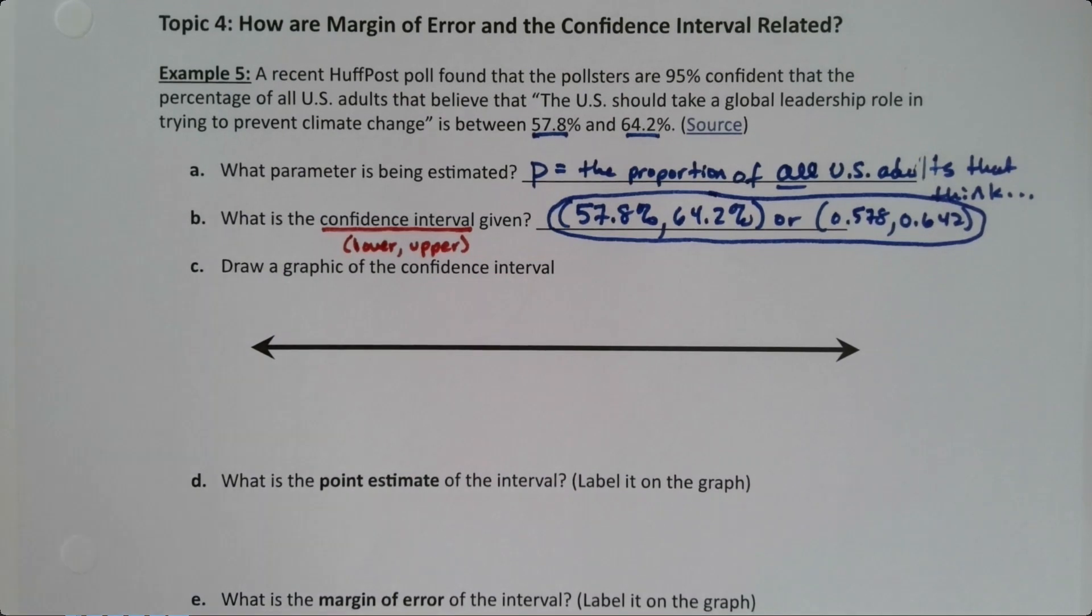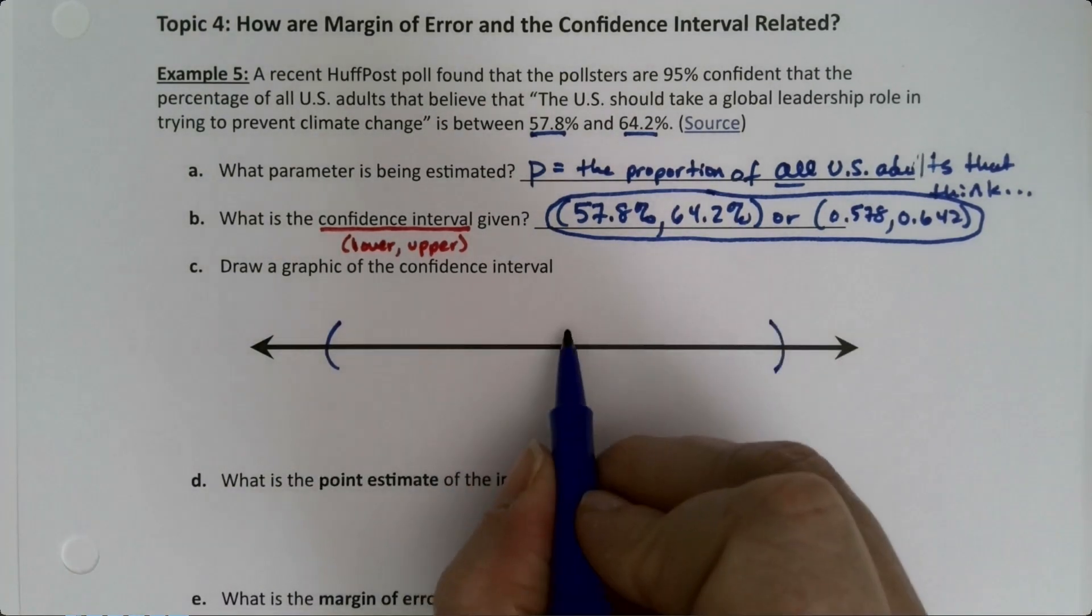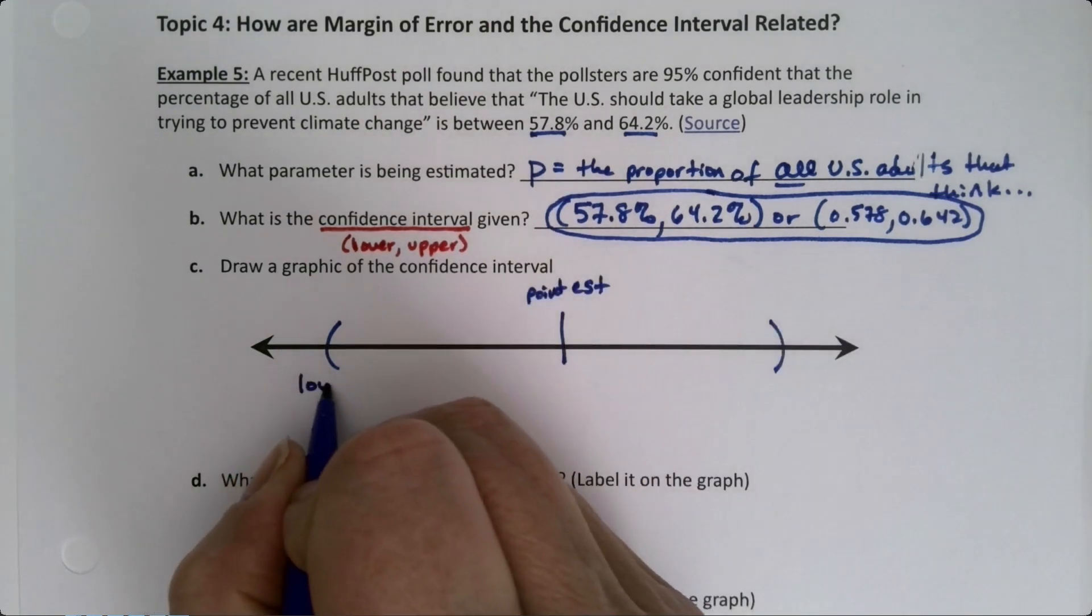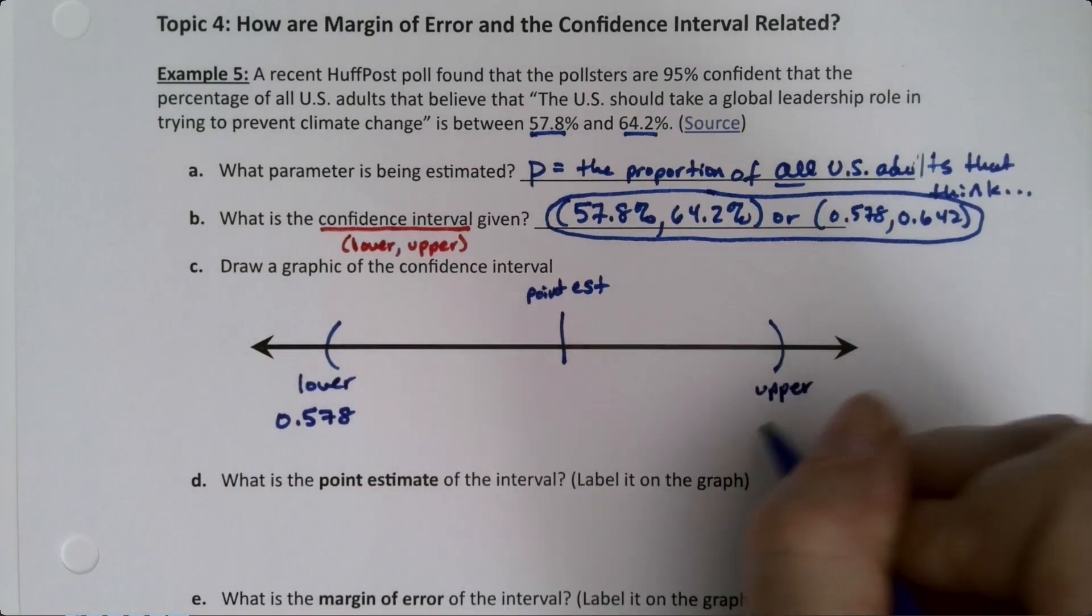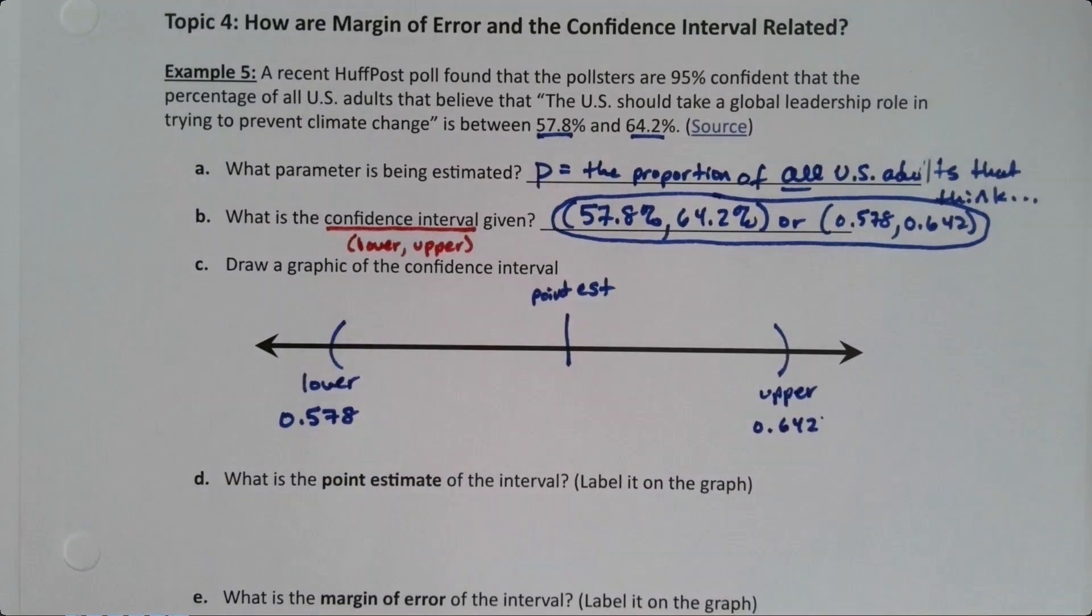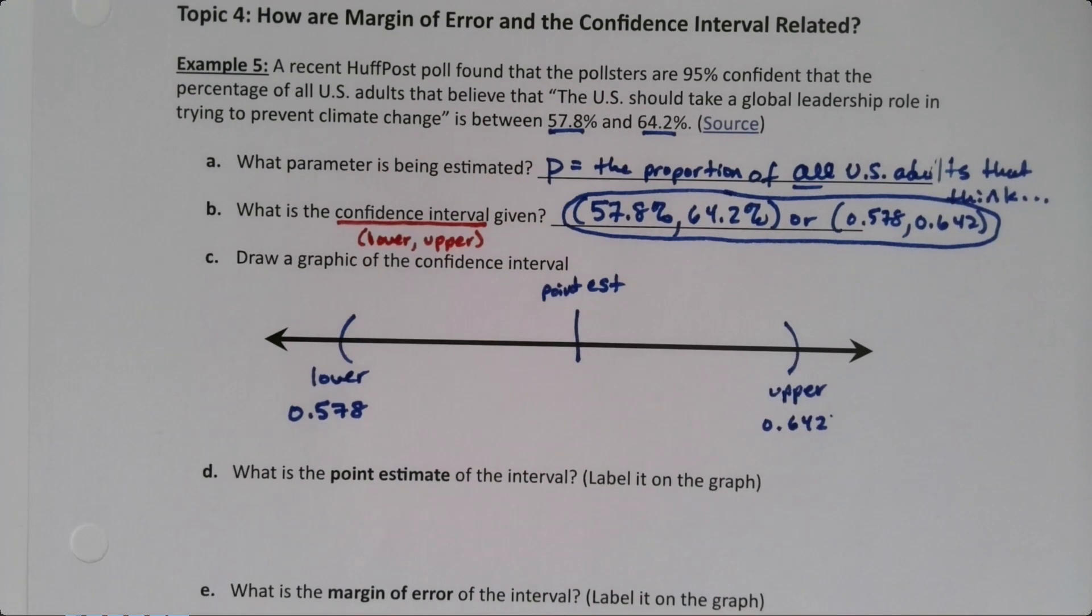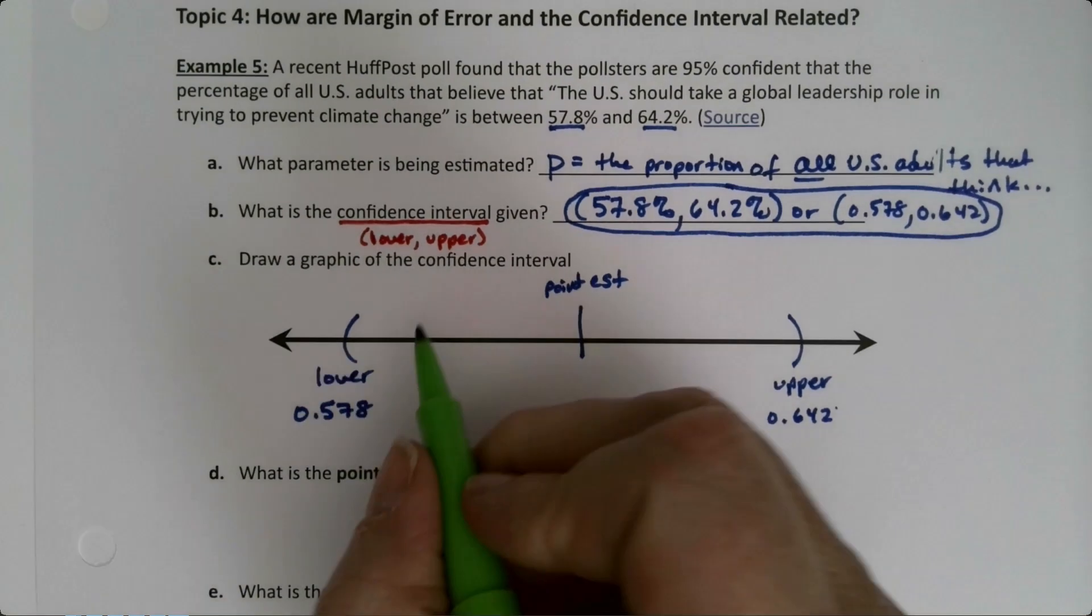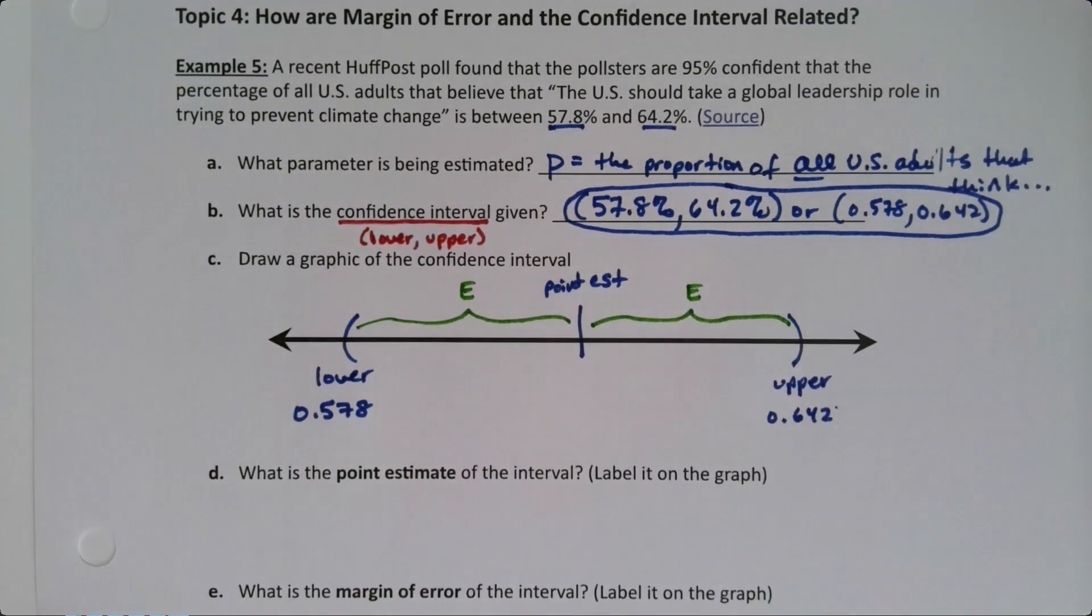Okay, now it always helps to kind of remind yourself of how this works. So you have your lower, you have your upper, and your point estimate goes in the middle. So the point estimate is down here, your lower is 0.578, your upper is 0.642. And if you want to write them as percentages that's fine, just don't forget to write the percent sign next to them. It's not 64.2, it's 64.2%, so you have to write the little percent symbol.